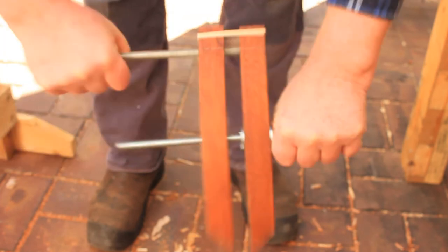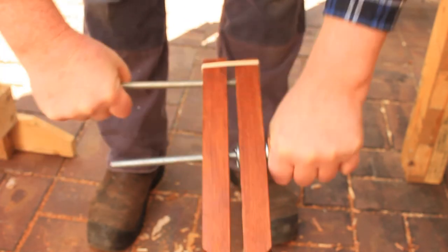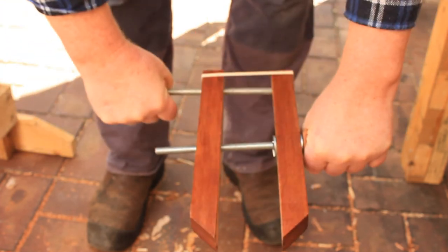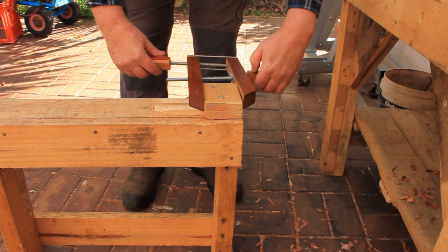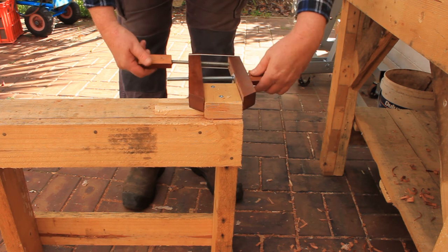Use this two handed technique to wind the clamp in and out. To use the clamp adjust the middle handle first then fully tighten the rear handle.